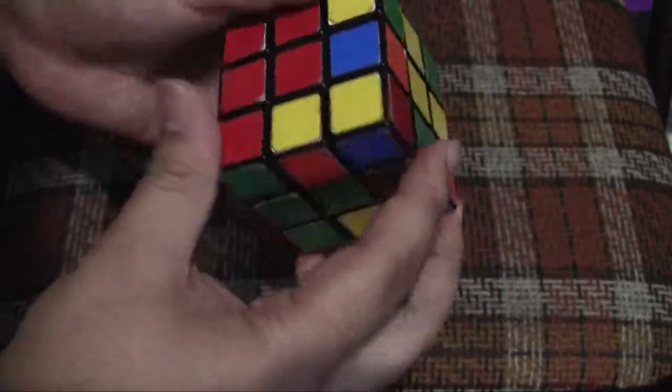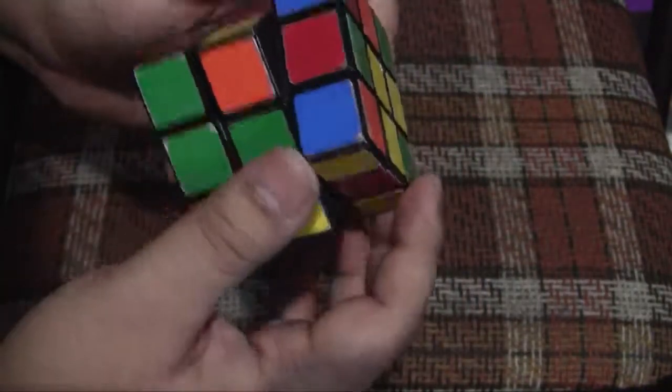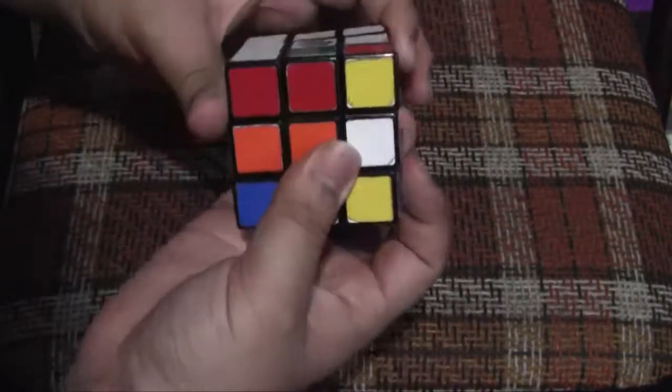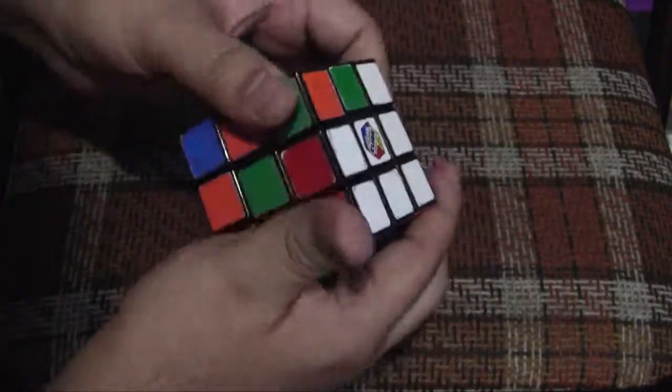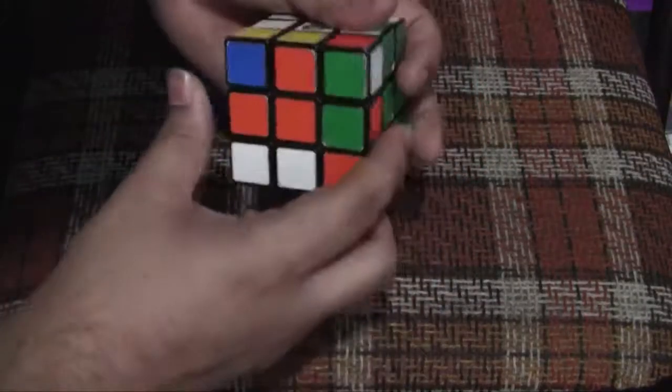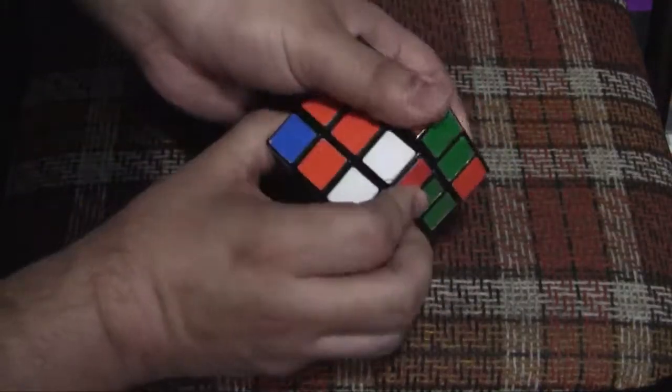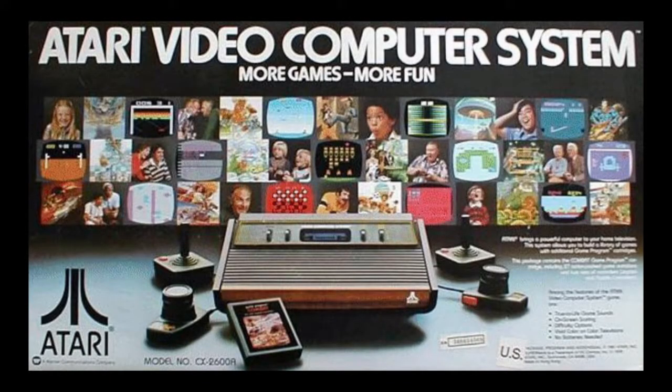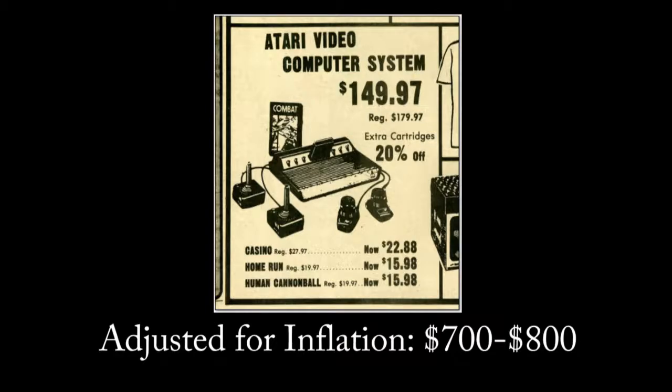The game was first released as the Magic Cube in 1977 in Budapest and later released to the rest of the world as the Rubik's Cube in 1980. The best thing about this game was that it didn't require a console, which is good considering people were still playing the Atari 2600 at the time.